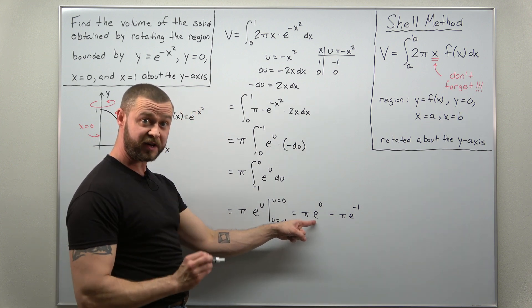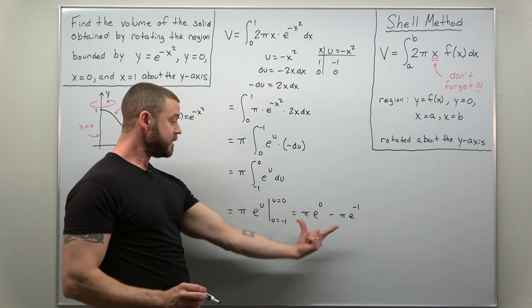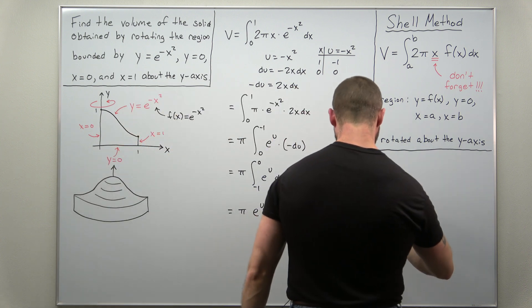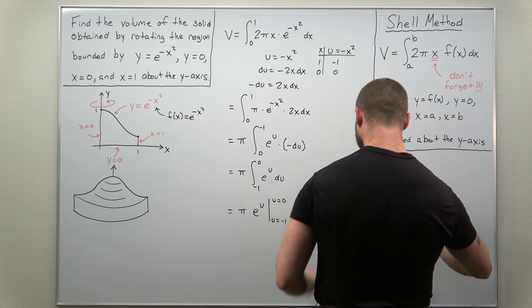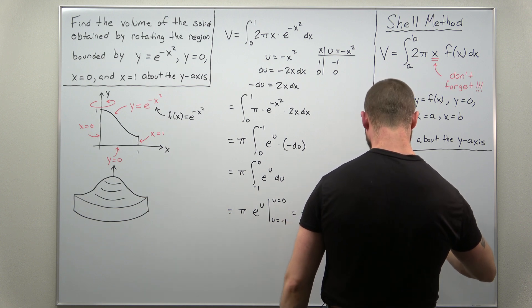And at least one of those values is nice. e to the 0 is 1. You can factor π out here. And you can write your final answer as π times (1 minus e to the negative 1).